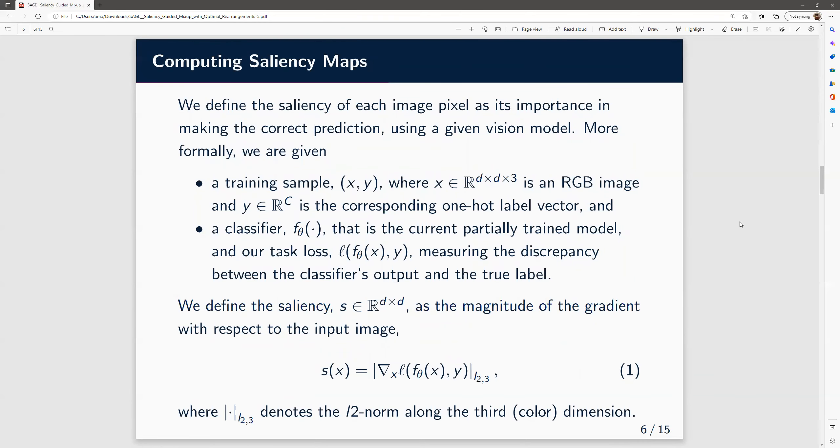Starting with the first module, that is to compute the saliency map. We define saliency of each pixel as its importance in making the correct prediction using a given vision model. More formally, we're given a training sample x,y, where x is an RGB image and y is the one-hot label, and the classifier f_theta, that is the current partially trained model, and our loss L of f_theta(x) and y, measuring the discrepancy between classifier's output and the true label. This could be, for instance, the cross entropy loss.